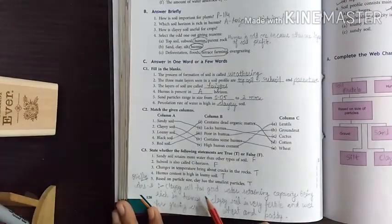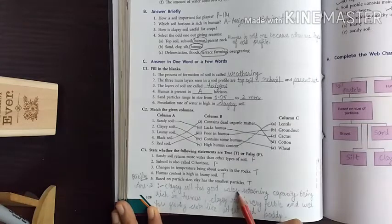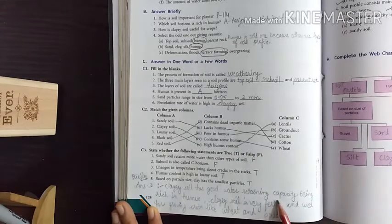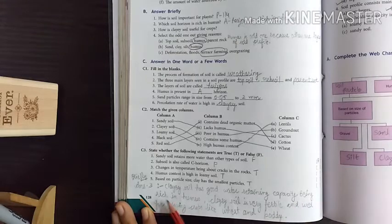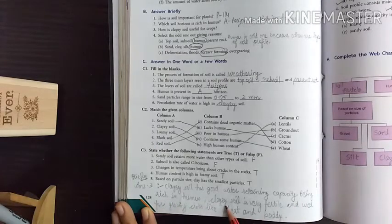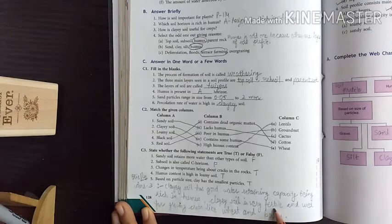Clay soil has good water retaining capacity. Being rich in humus, clay soil is very fertile and used for growing crops like wheat and paddy.